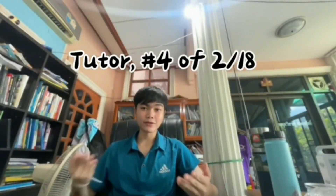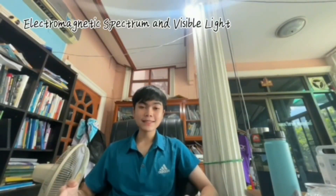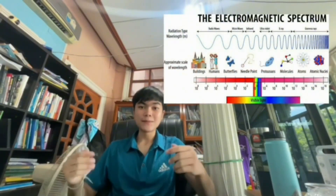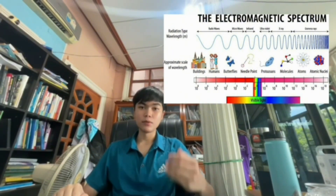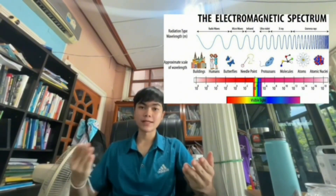Before diving into how light affects plant growth, let's talk about light. Light exists along an electromagnetic spectrum, which has various types of wavelengths and energies. The portion we see is visible light, ranging from the longer blue and violet to shorter red and orange wavelengths.